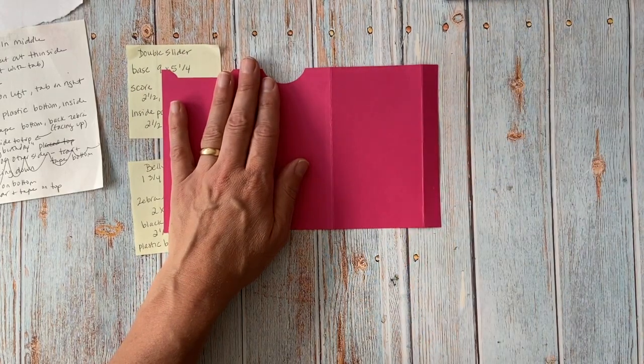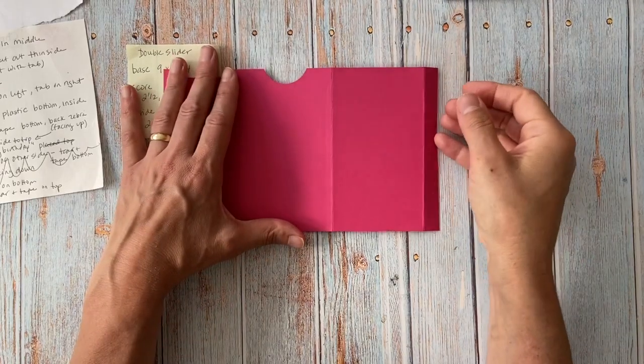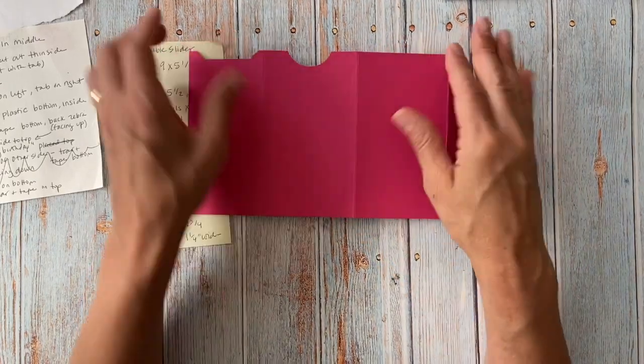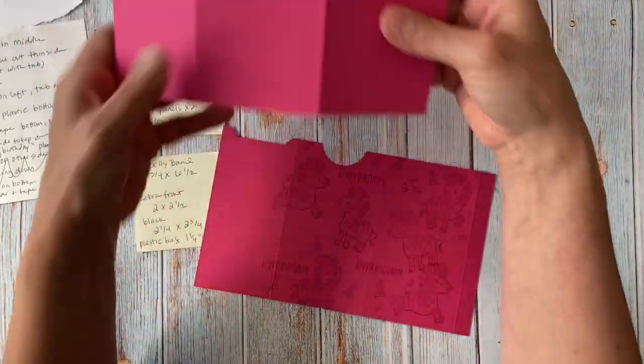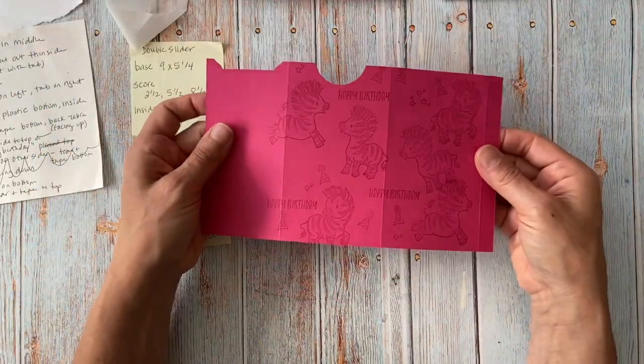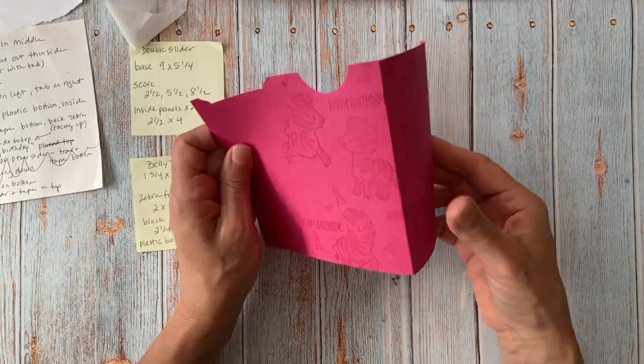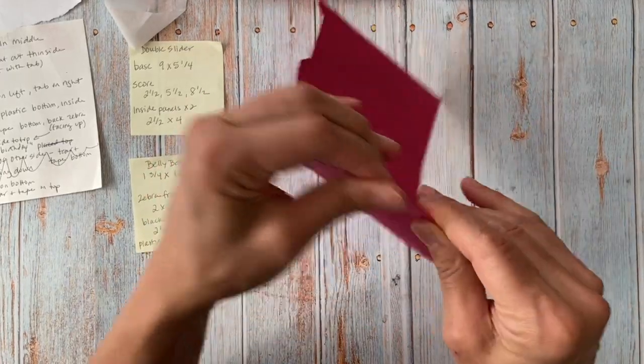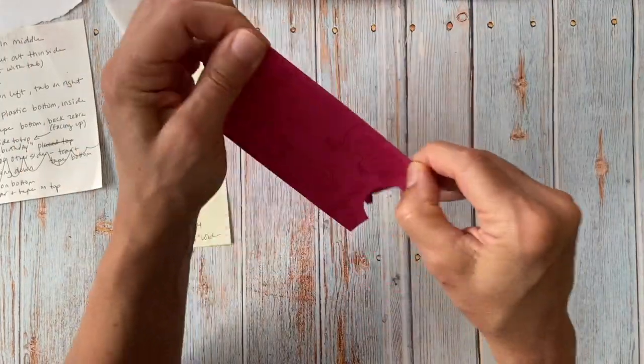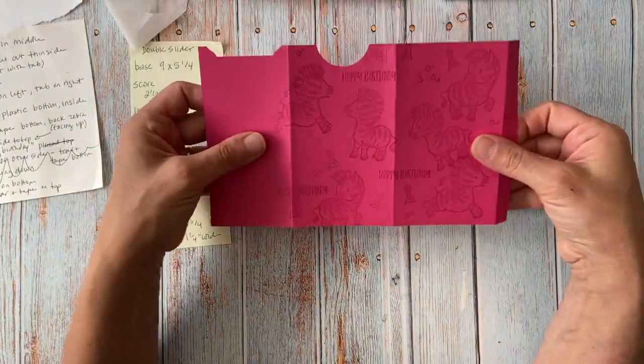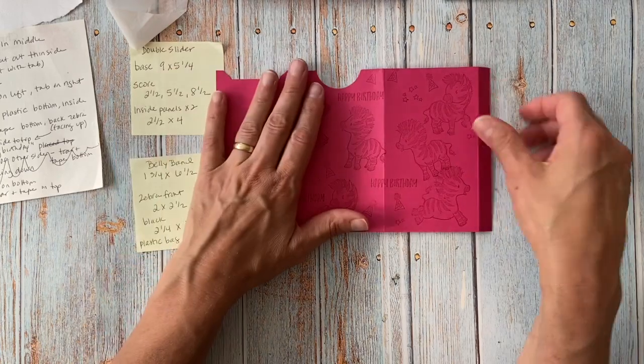But I thought the colors were kind of fun and happy. So you can, I'm sure if you have flowers or balloons or something, I've already stamped it just to save a little time on the video right here. So I did my zebras and I didn't even bring up the stamp set. I think it's called zany zebras. It's kind of a fun one. It's actually found in the beginner's catalog. But it's available for anybody to purchase. So it's kind of fun.